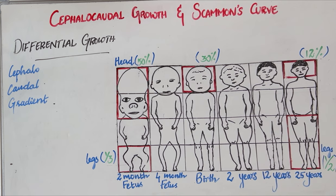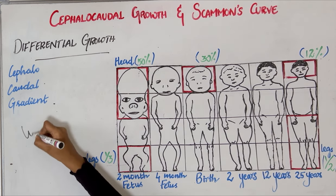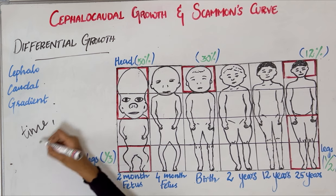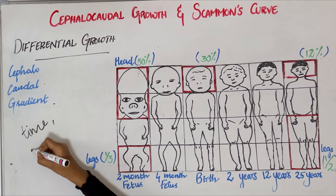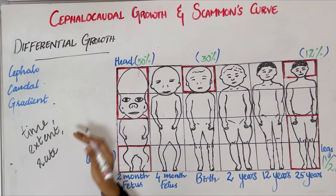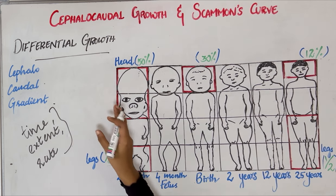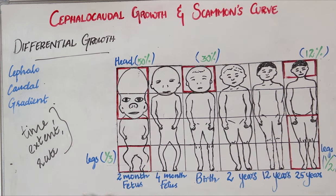In this video we'll be seeing about the cephalocaudal gradient of growth and Scammon's growth curve. They come under the topic of growth and development in orthodontics. The human body does not show uniform growth — each part will grow at a different time, the amount and extent of growth will vary, and the rate of growth will also change. This is called differential growth, and differential growth is expressed through the cephalocaudal gradient of growth and Scammon's growth curve.